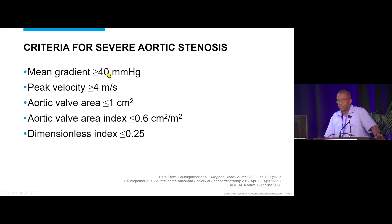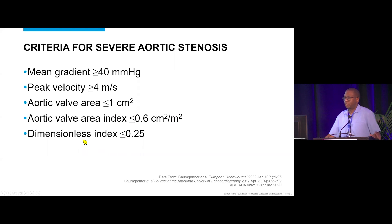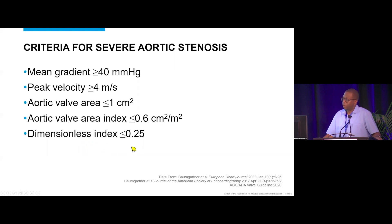A velocity of 4 m/s and gradient of 40 mmHg is severe aortic valve stenosis until proven otherwise. This usually occurs with a small aortic valve area less than 1 cm², or when indexed to body surface area less than 0.6 cm²/m². There is also the dimensionless index — the ratio of velocity in the left ventricular outflow tract to that across the aortic valve — where 0.25 or less is considered severe.